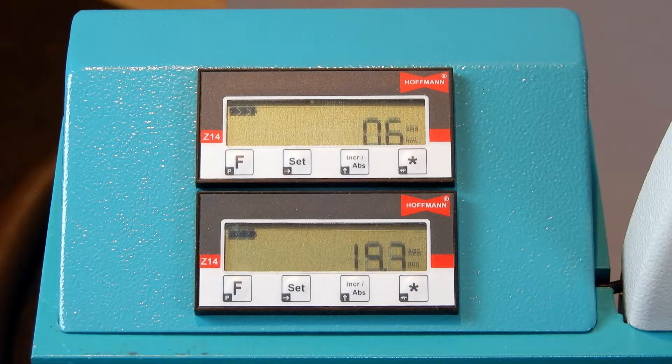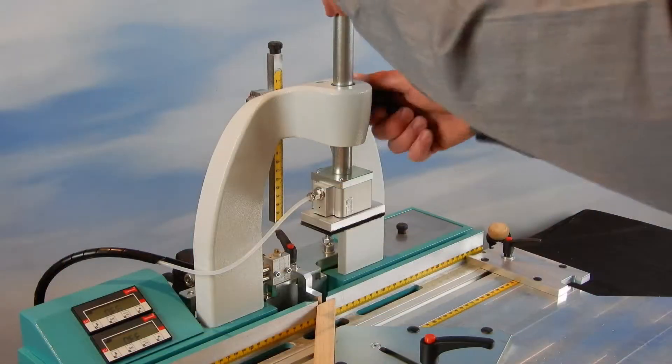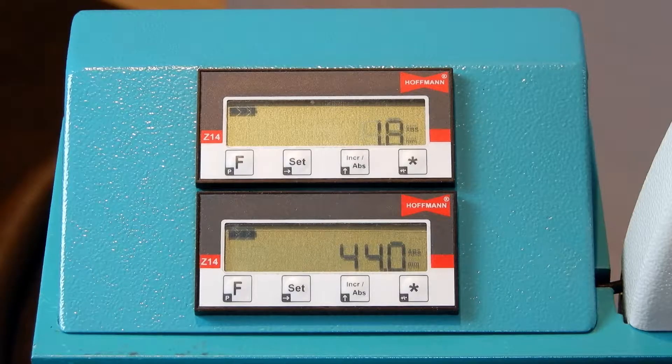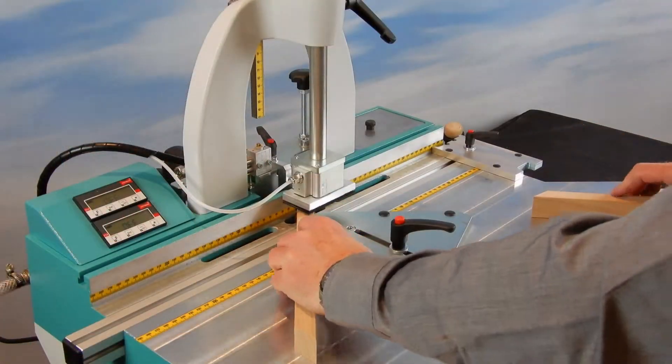The angle fence is adjusted for the keyway position. The routing height adjustment is determined by the thickness of the profile and the length of the Hoffman key.